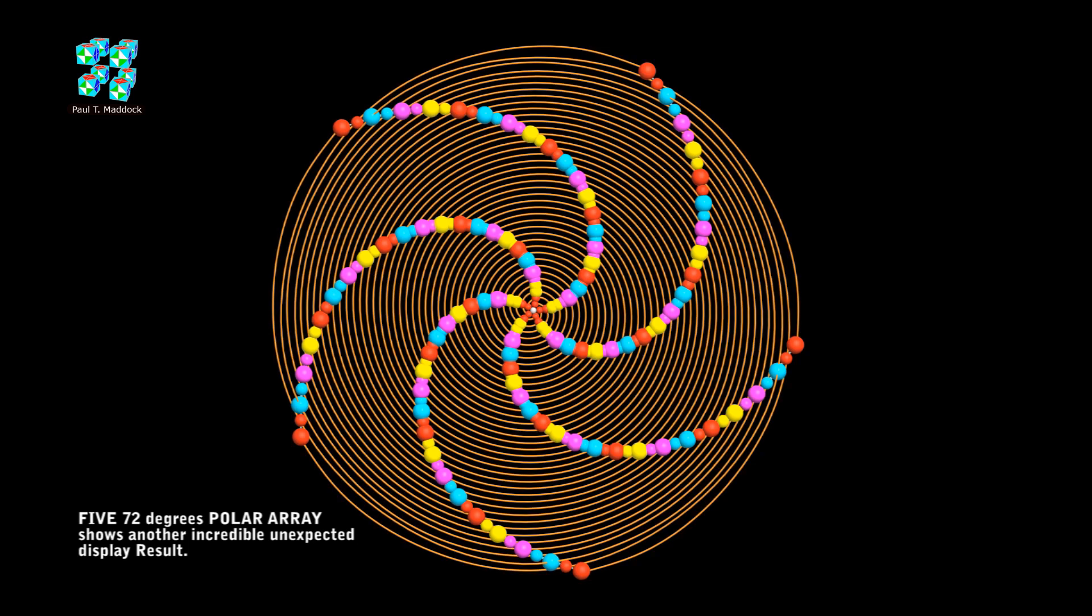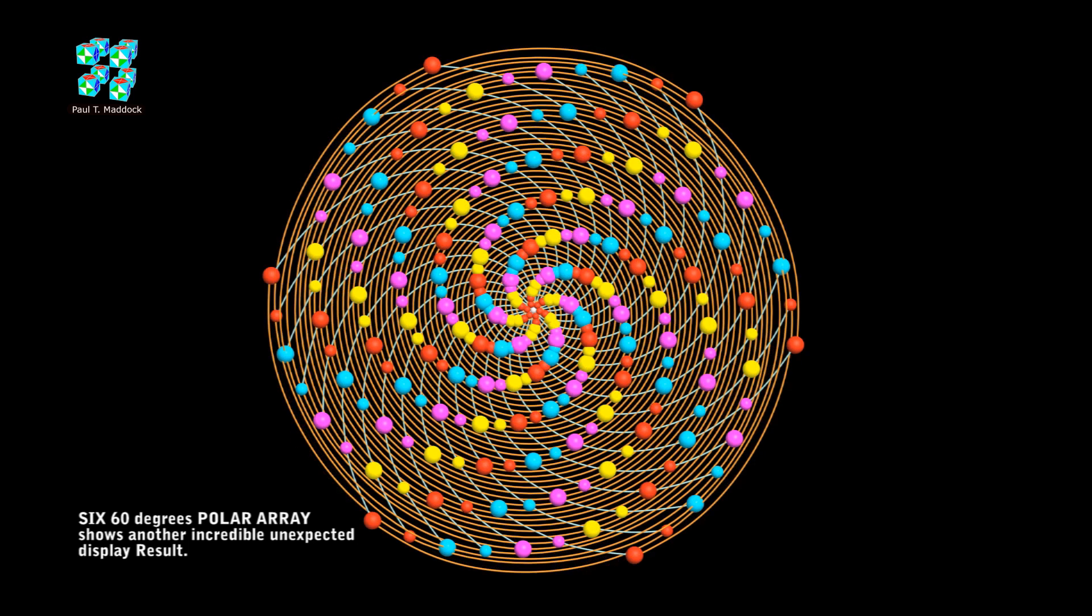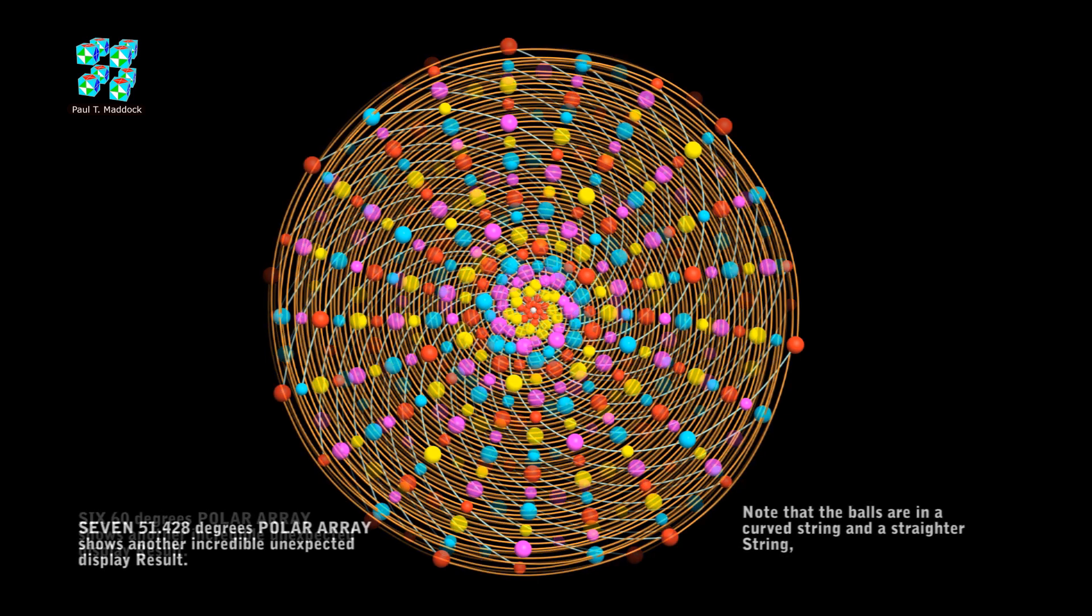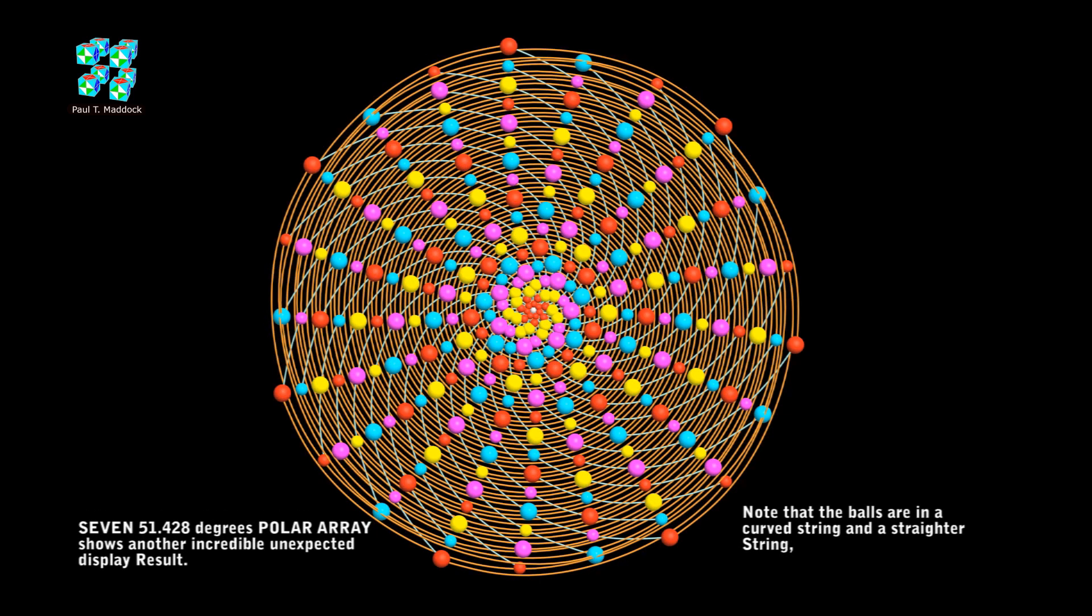Now I'm going to show you the results of a 6 array. You can see we have a new arrangement again. This is getting more interesting all the time. Let's take a look what happens if we make a 7 array. This is very interesting also. Note that the color balls are in a curved arrangement. And they're also coming looking like a straight arrangement. I think we have something here that needs a bit of research. I think it would be nice to see what happens if we change the angle slightly.